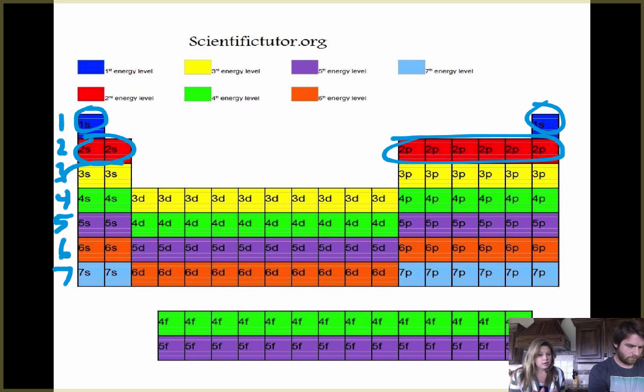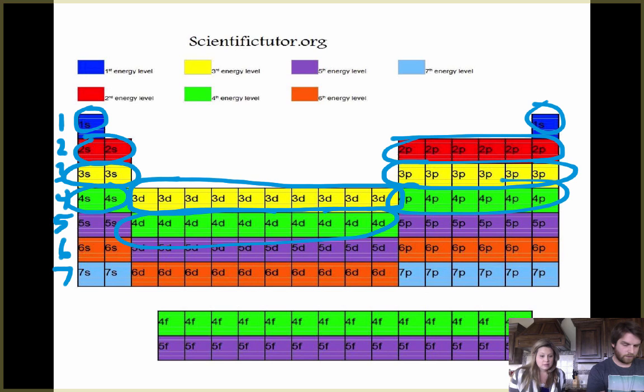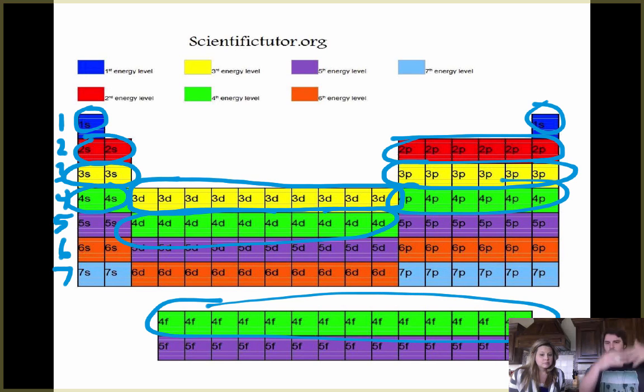The third energy level, we have a three S, a three P, but we also have a three D. So now we can hold 18. It's getting a lot more complicated here. And then four is where we start adding in for all the green ones and we have 14 as well. So they can hold more and more as we go up.